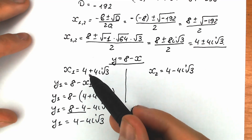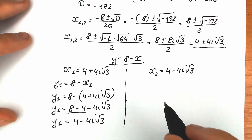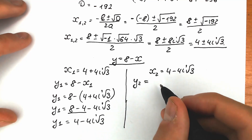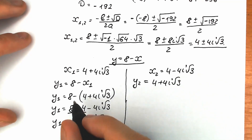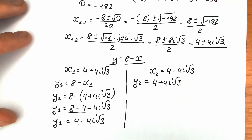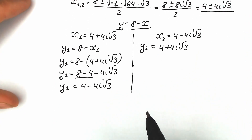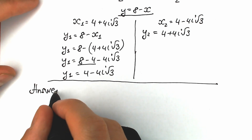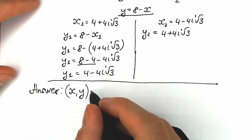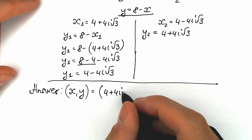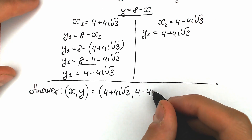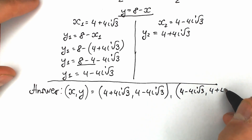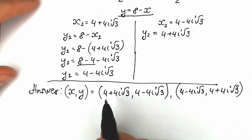Almost the same but with the opposite sign. For y₂ it will be completely the same process. We can easily write that y₂ equals 4 plus 4i square root of 3. So we know everything now about x₁ and y₁, and about x₂ and y₂. Our final answer: we have two pairs of solutions. The first pair is x equals 4 plus 4i√3 and y equals 4 minus 4i√3. The second pair is x equals 4 minus 4i√3 and y equals 4 plus 4i√3.